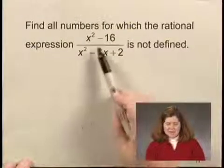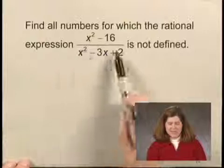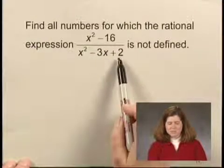In this exercise, we'll find all numbers for which a rational expression is not defined. The rational expression we're looking at is x squared minus 16 divided by x squared minus 3x plus 2.